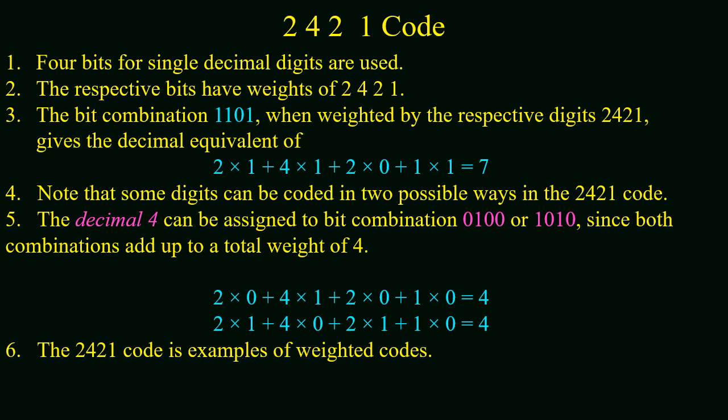Now we will start with 2421 code. In this code, again four bits are used for a single decimal digit like in BCD, but here the weight of bits is a bit different. The weighting factor commonly used are 2421 starting from the least significant bit.